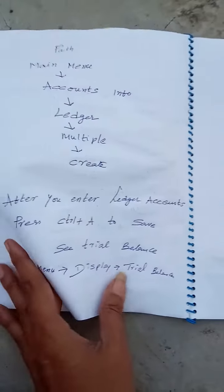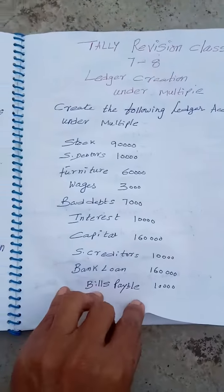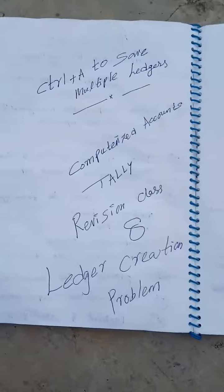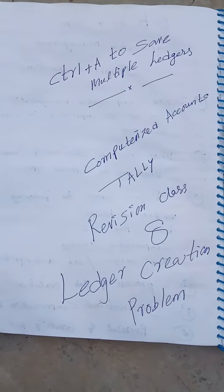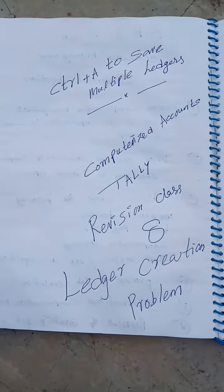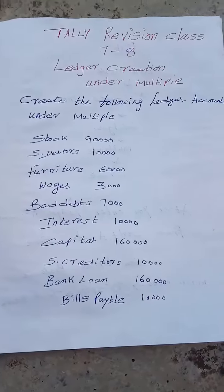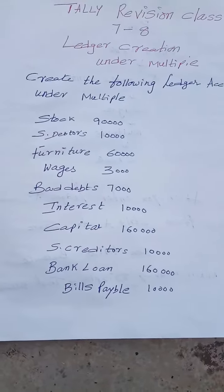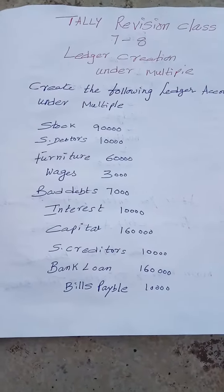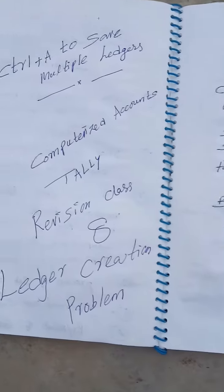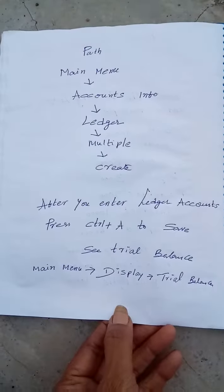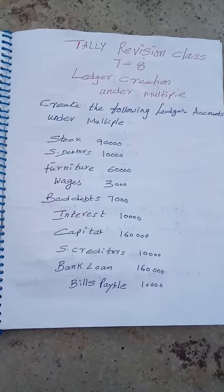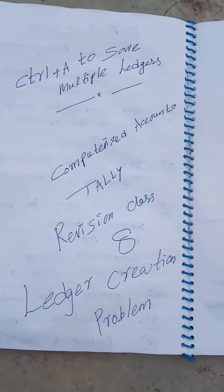Then you will continue to add the address. This is all about ledger creation under multiple, with example problems — question, answer, and outputs. Single means one after one; multiple means one screen for all. This covers control and press shortcuts for ledger entry.